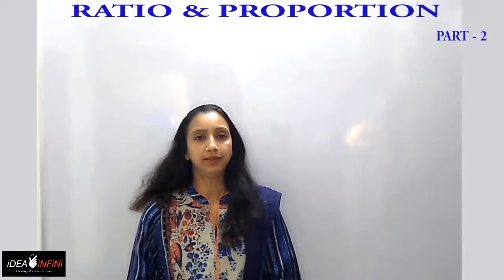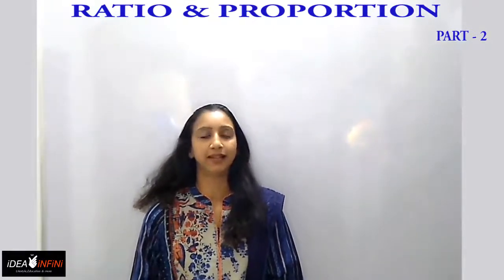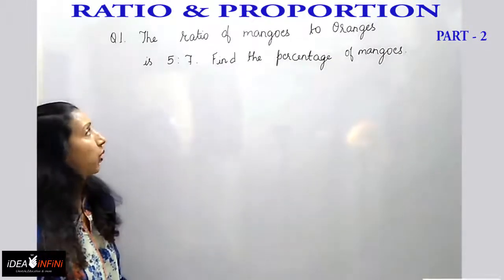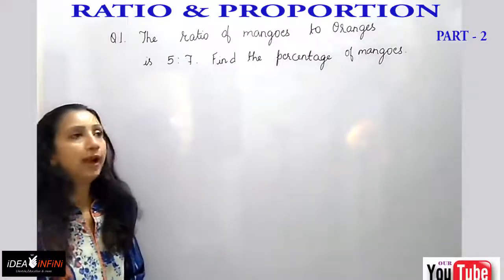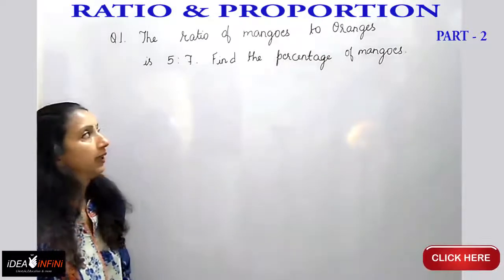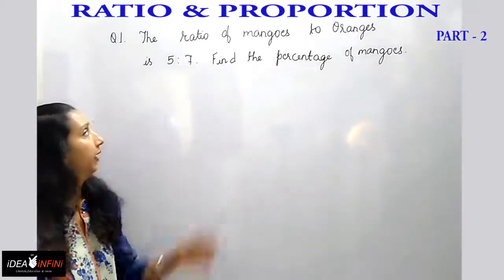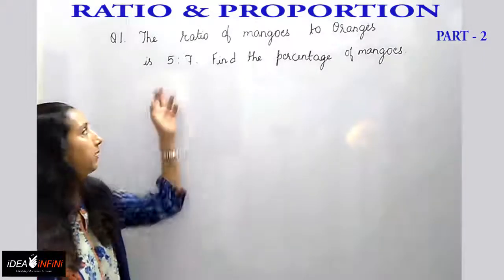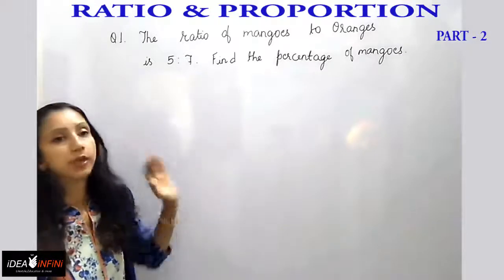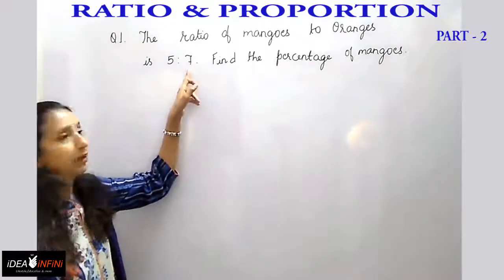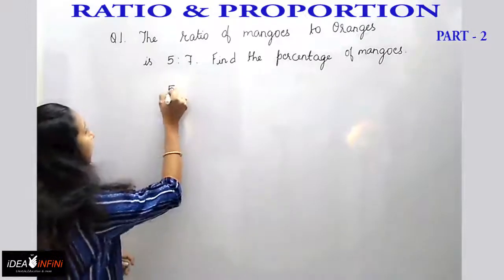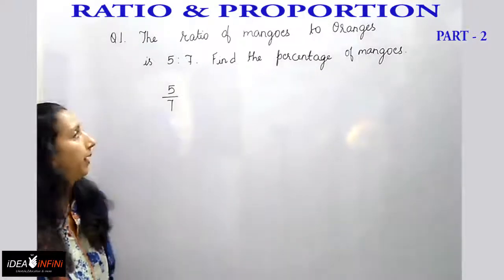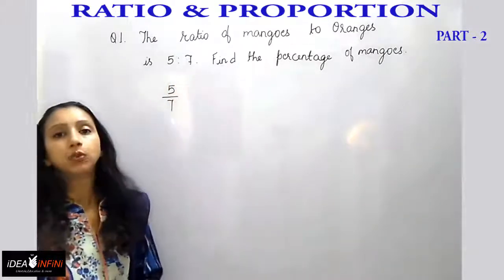Today we are going to learn the conversion of ratios into percentage. Here is a question: the ratio of mangoes to oranges is 5 is to 7 — find the percentage of mangoes. There are two kinds of fruits given in the ratio 5 is to 7. We don't know the exact quantity; it can be 50 and 70 or another multiple of 5 and 7. Now, 5 is to 7 means 5 by 7, which is the ratio expressed in fraction form, and we need to convert it into a percentage.